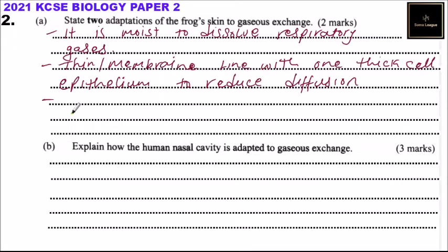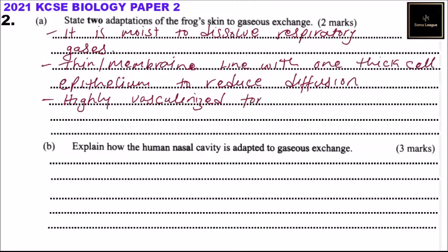The other adaptation is it is highly vascularized — or we can say it has very many blood vessels — for faster or efficient transportation of respiratory gases.